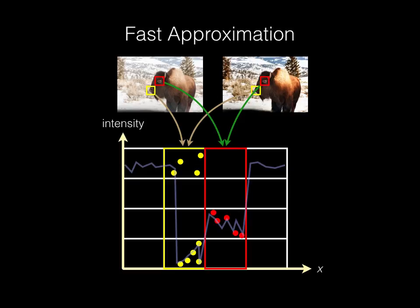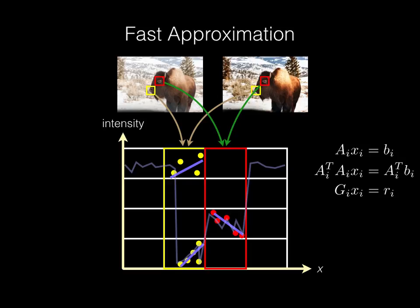We can approximate this by simply diffusing our data terms into neighboring cells. Recall that to fit lines within each cell i, we write down the over-complete system of equations Ax equals b. This results in the normal equations Gx equals r.